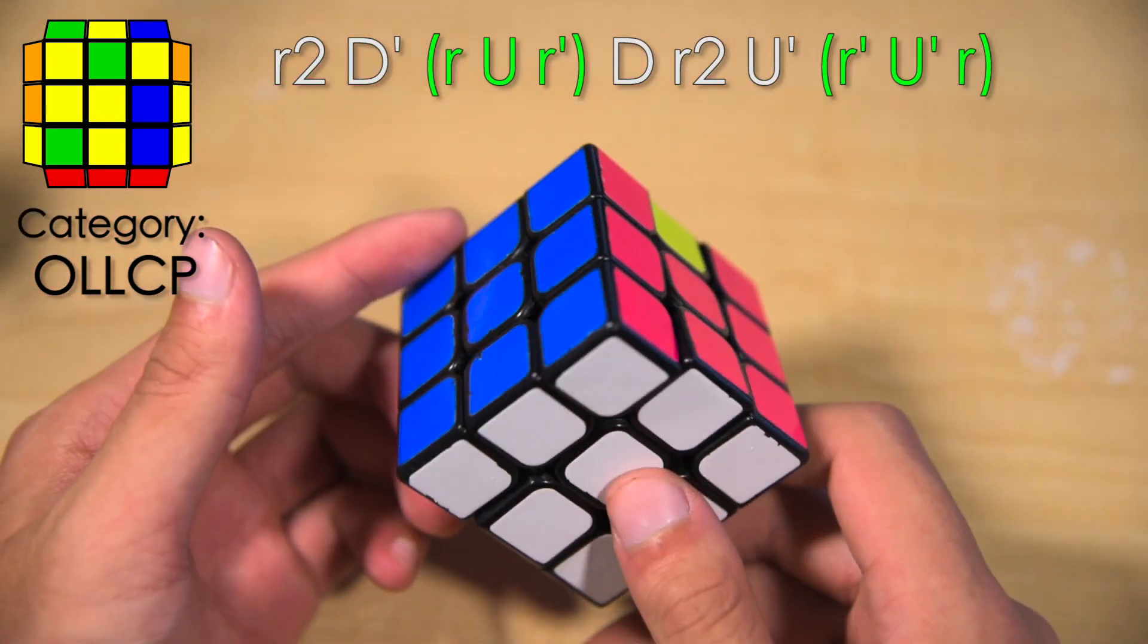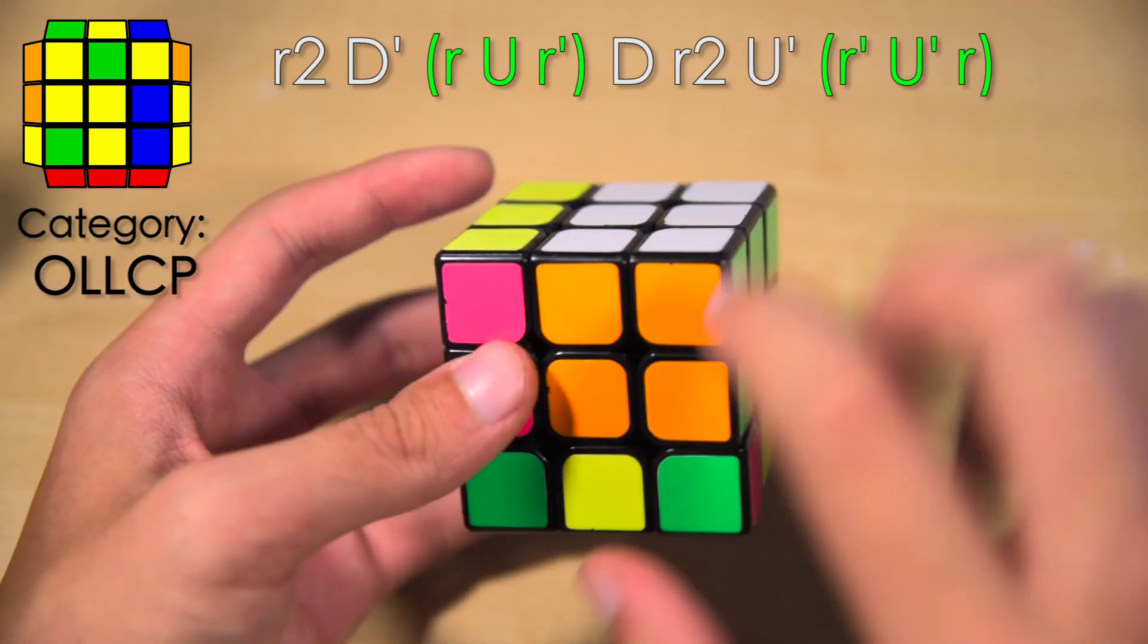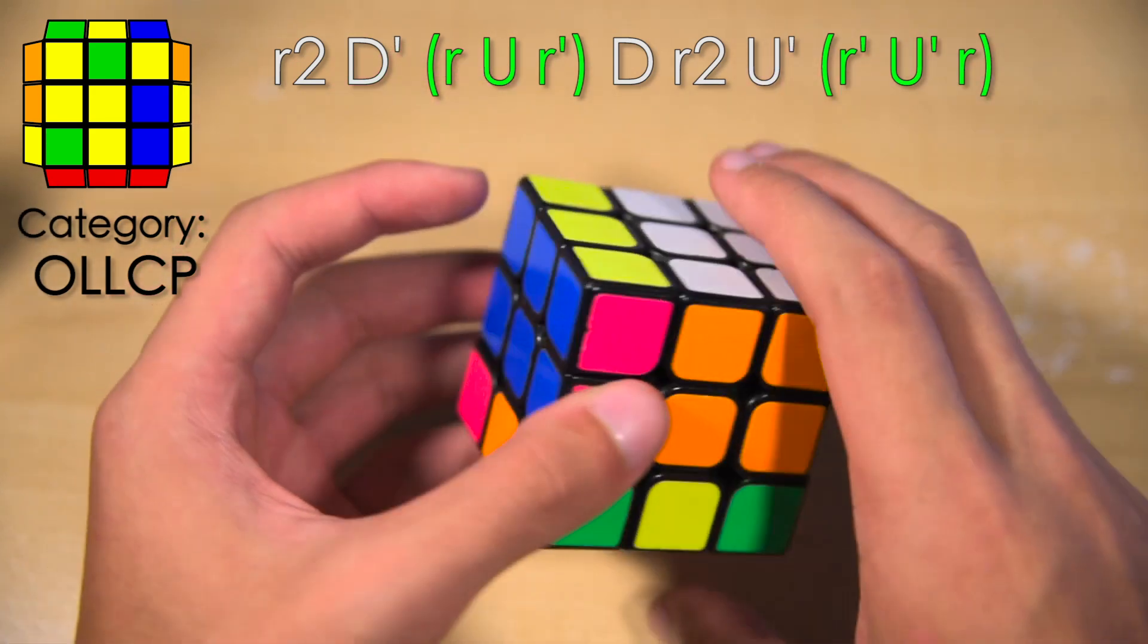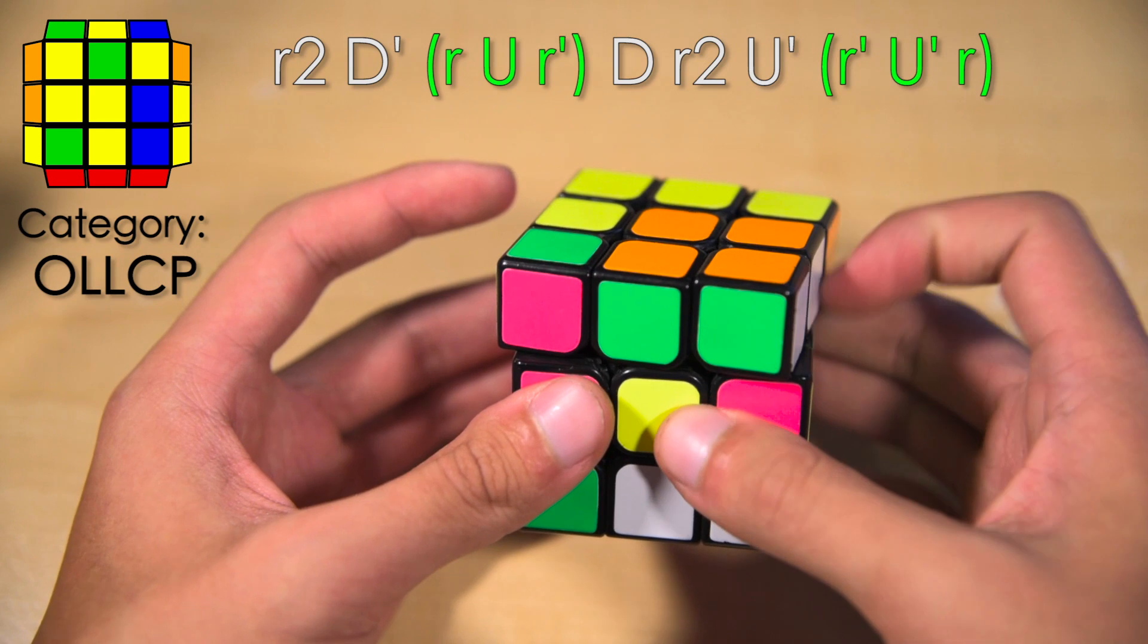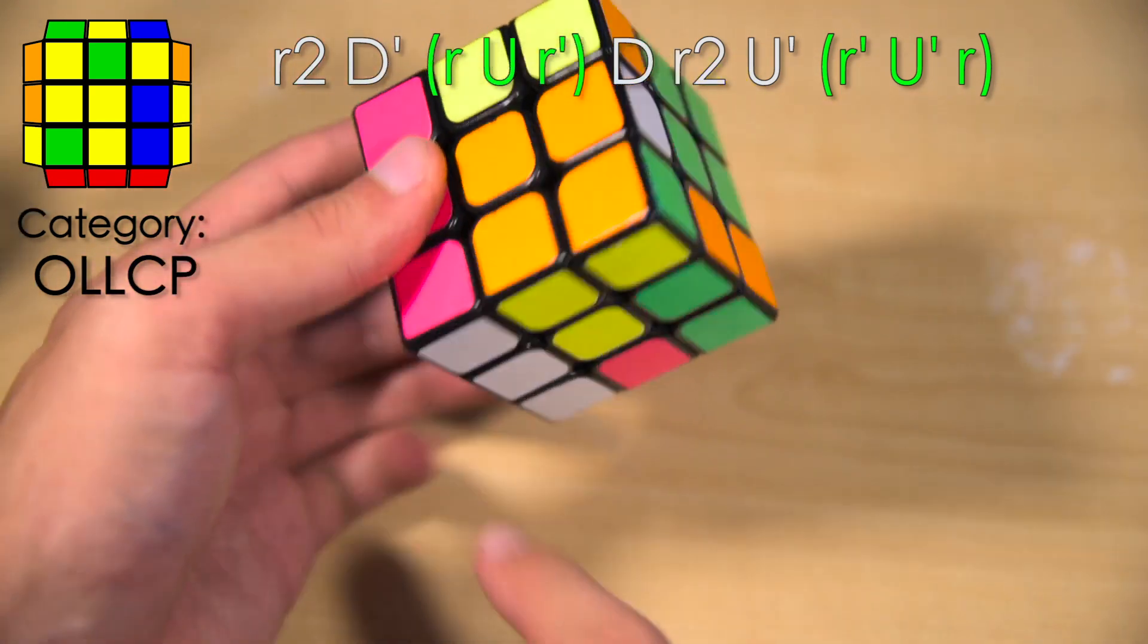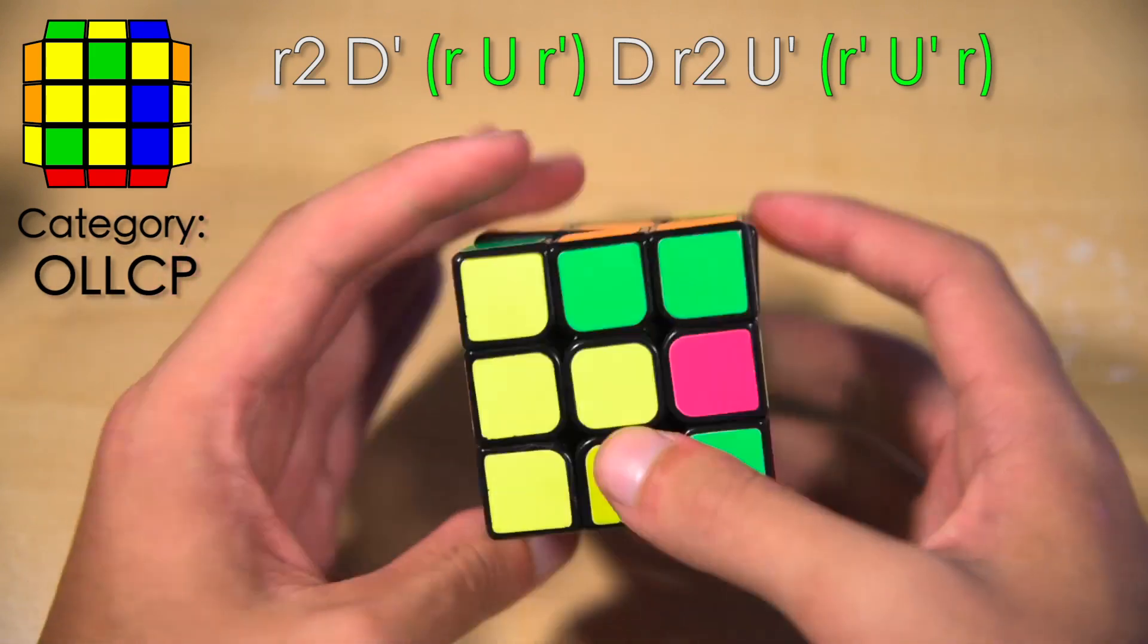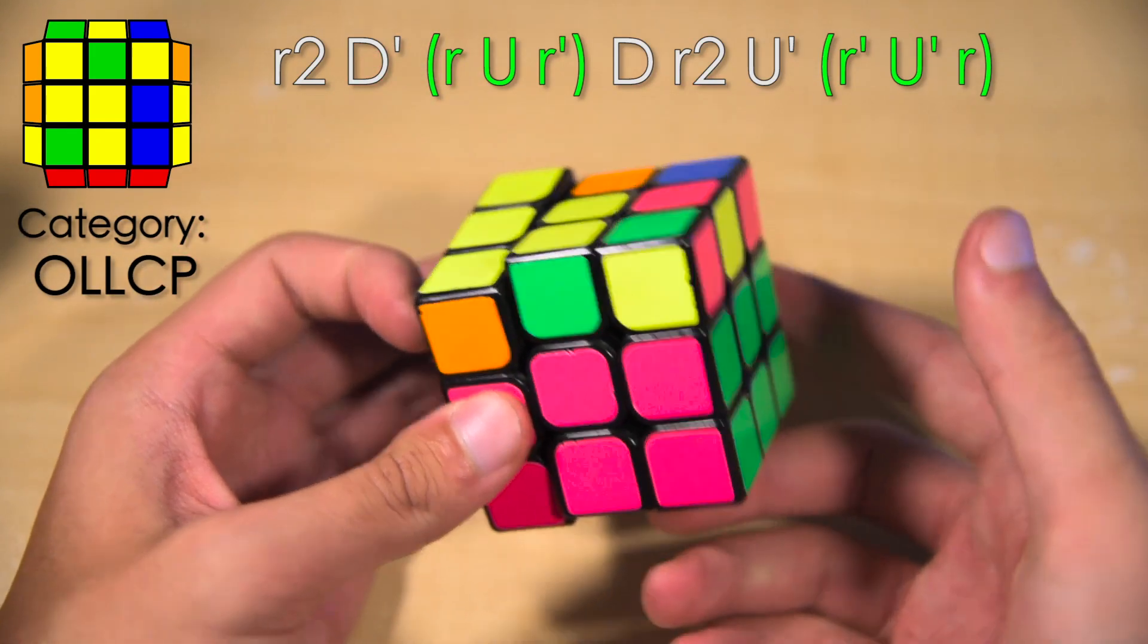So all you do to learn this aug is little r2 d prime, simple enough. Now you're going to break up this block. So little r u little r prime. Break up the pair with d, which solves your left pair, little r2, and then solve this back pair. So u prime, little r prime, u prime, little r.